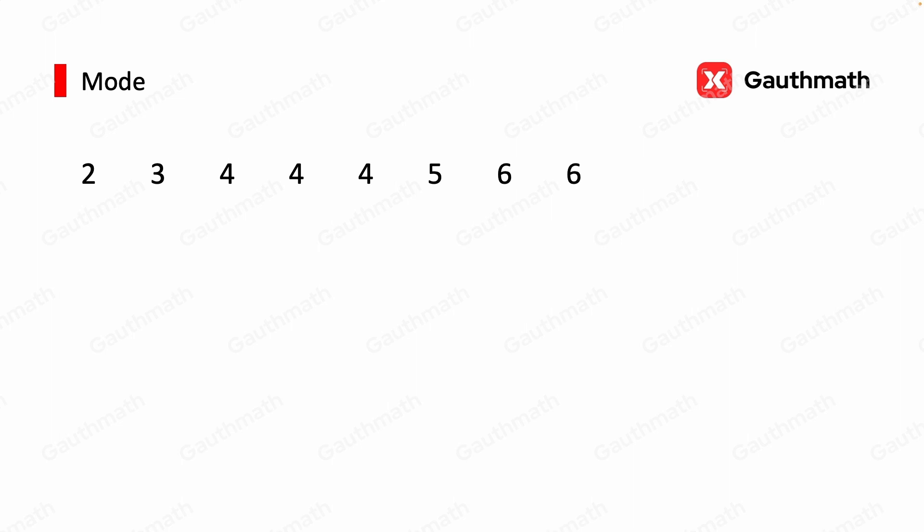Then we can count the number of each value first. We have one 2, one 3, three 4s, one 5, and two 6s. We can see that 4 is the most common value. It appeared three times, and so our mode is 4.